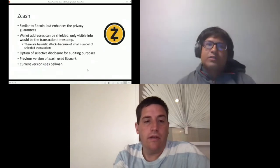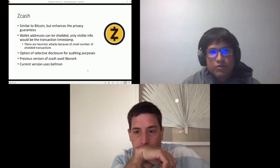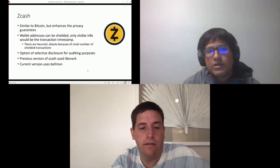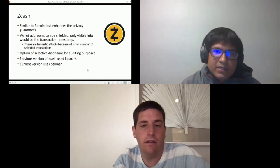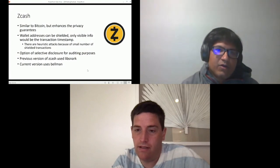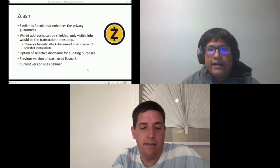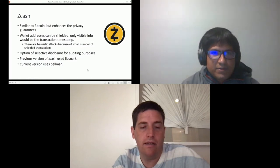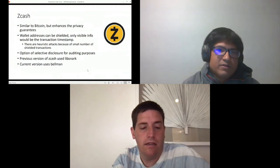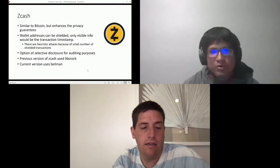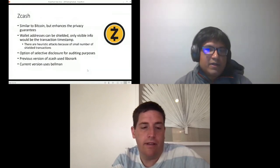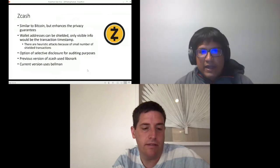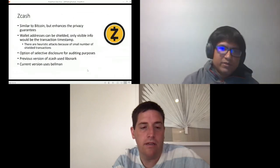Now in terms of application, Zcash is the most—I guess most of you know about Zcash. This is a cryptocurrency similar to Bitcoin but it enhances the privacy guarantees. It ensures that the wallet address can be shielded if the user wants, and only visible info would be the transaction timestamp. However there are heuristic attacks because of small number of shielded transactions. It has option of selective disclosure for auditing purposes. Previous versions of Zcash used libsnark and then I think from 2018 they moved to Bellman which supports the Groth16 proving system implemented in Rust.